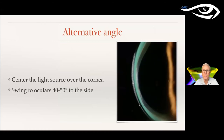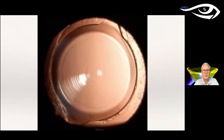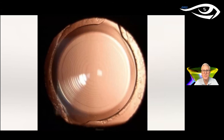Another technique for looking at scleral lenses: switch the positions of the oculars and the light source. Center the light source over the cornea instead of 40 degrees to the side, and swing the oculars to the other side. That way you get both angles. Here you can see the light source is right in front of our patient — my lab manager — with the oculars over to one side. This is how you flip it; it's pretty easy, and it makes for some pretty good pictures — like this symphony multifocal IOL with retro-illumination.